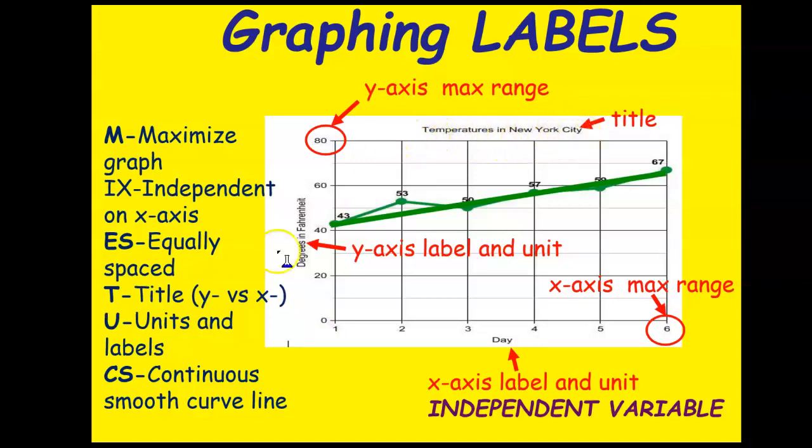If you don't have a title, you will use the y-axis versus the x-axis. In this case, it would be the degrees in Fahrenheit versus the days. Then the last, or the U, stands for units and labels. That's what these are.